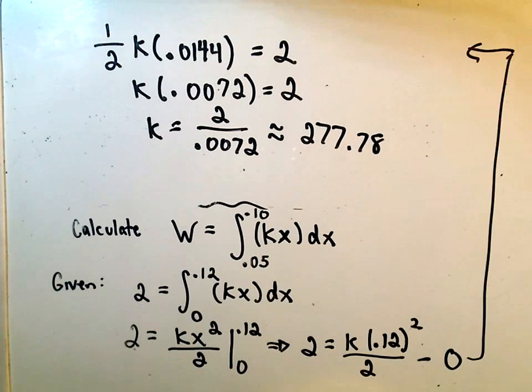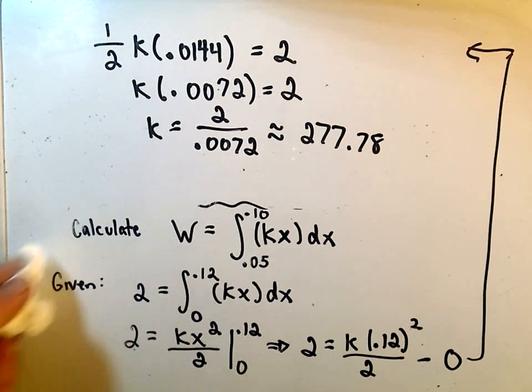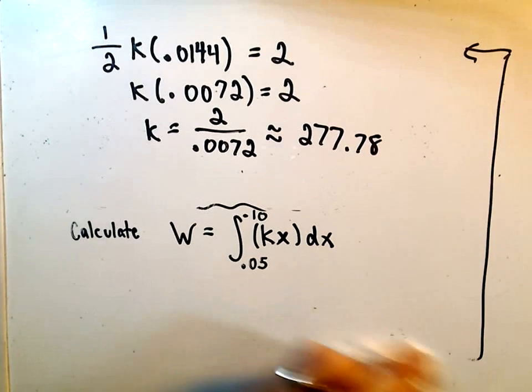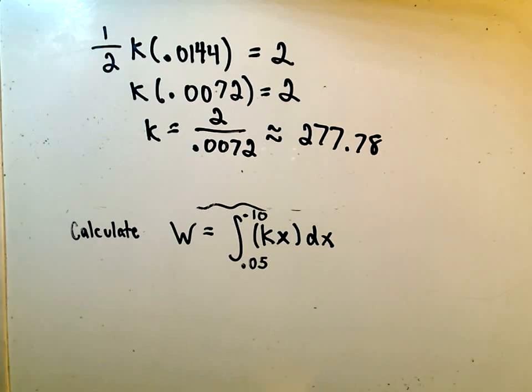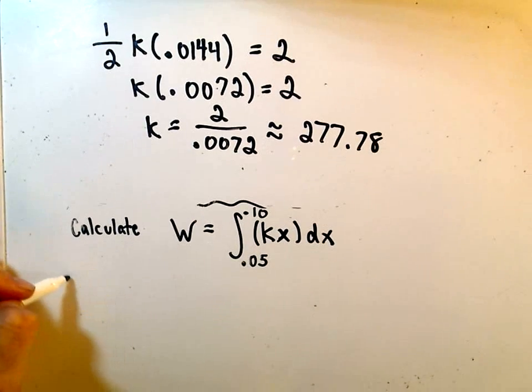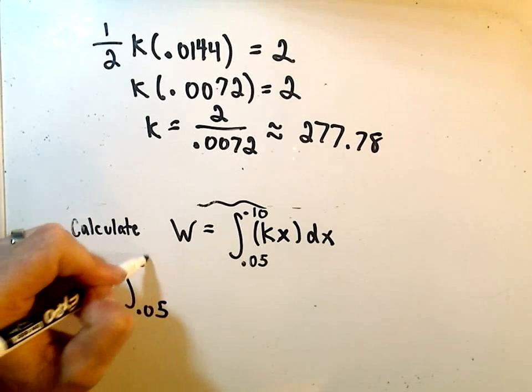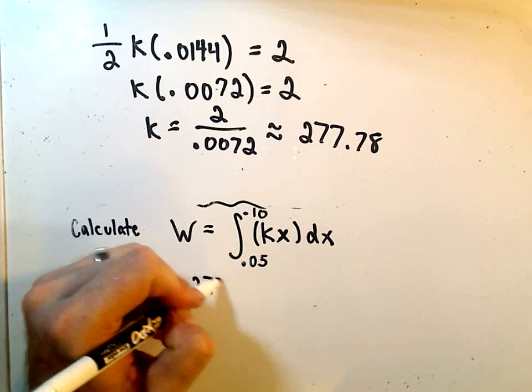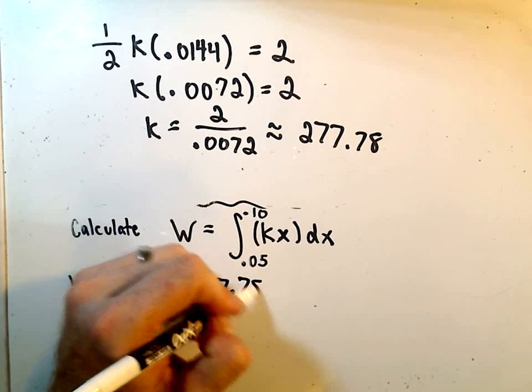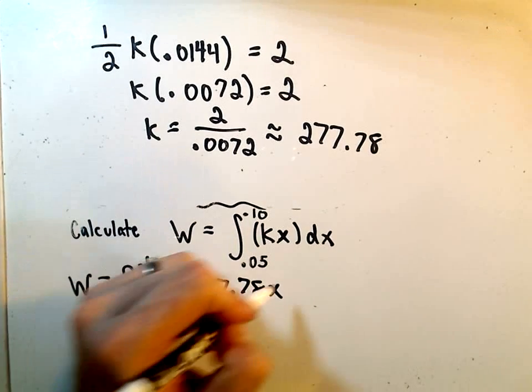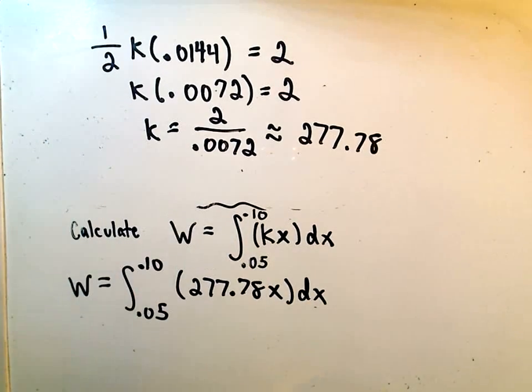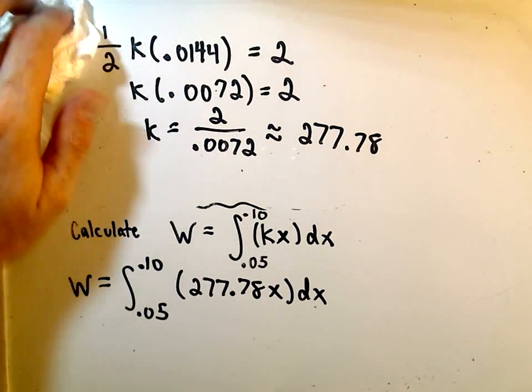And this would actually be in Newton meters, but I'm kind of bad about using units. So now the thing we actually have to calculate is the work. The function we're integrating over, well, now we were able to figure out k. It's 277.78. We multiply that by x dx, and now we just have a little bit of tedious arithmetic to do here.